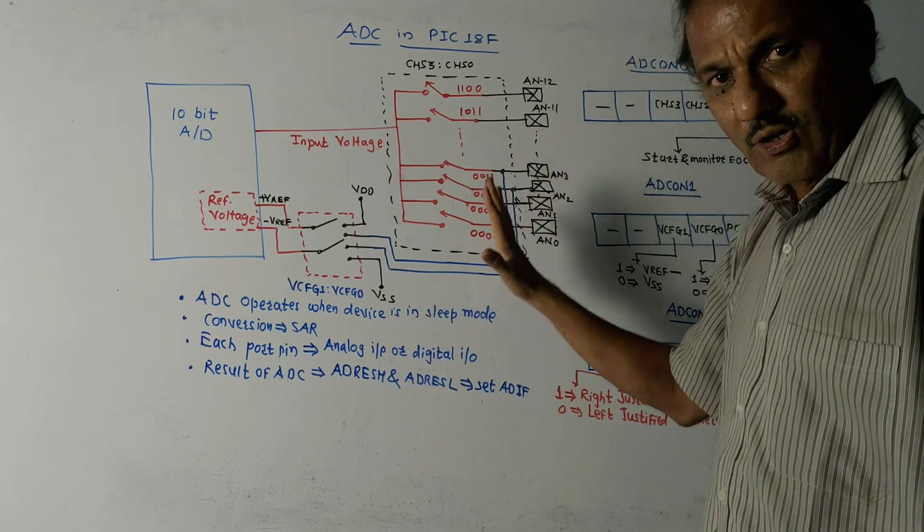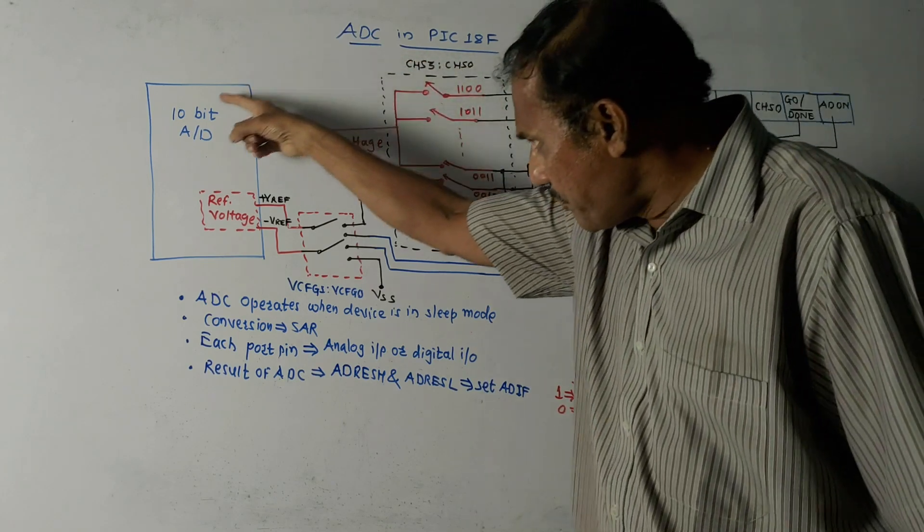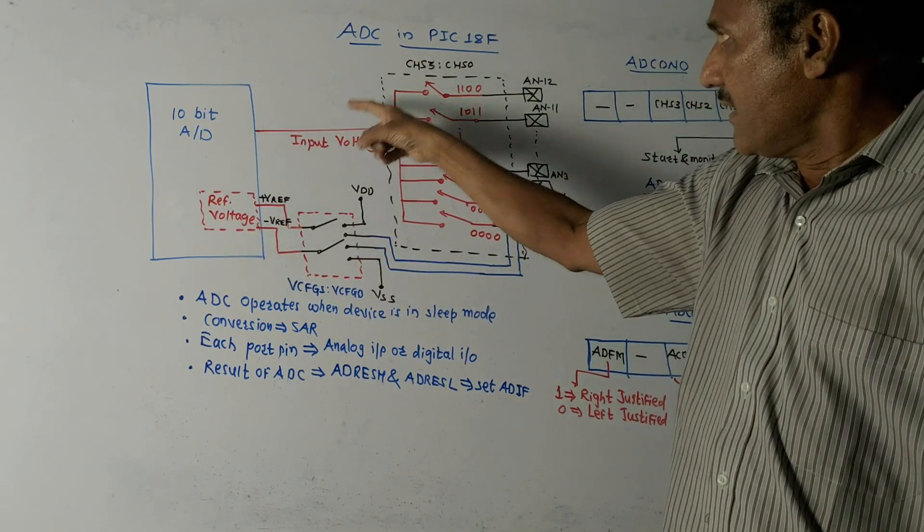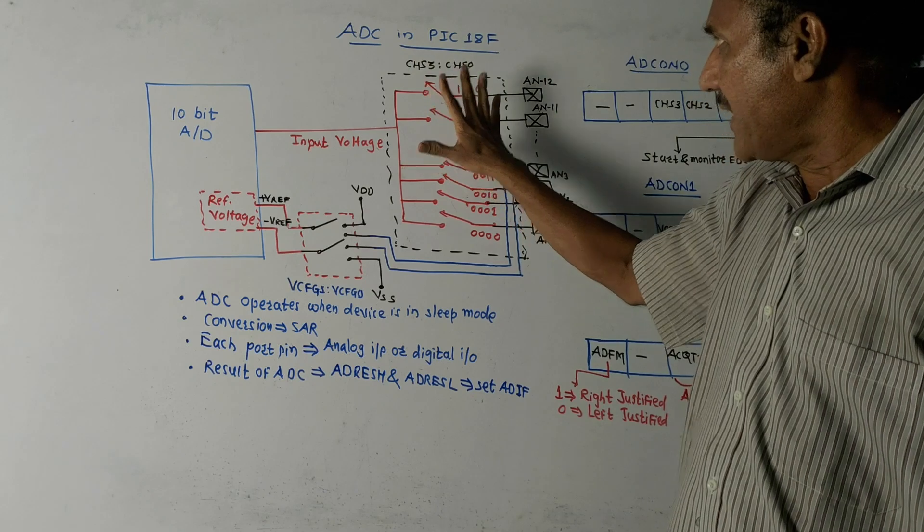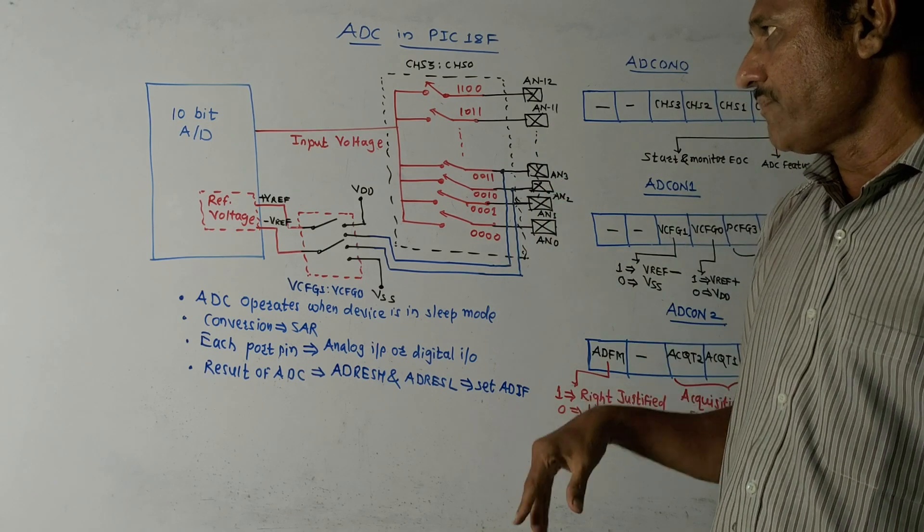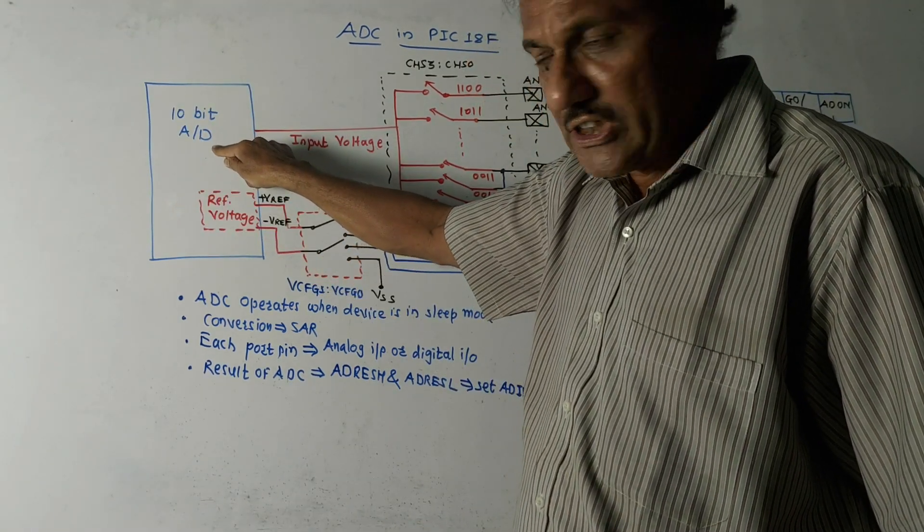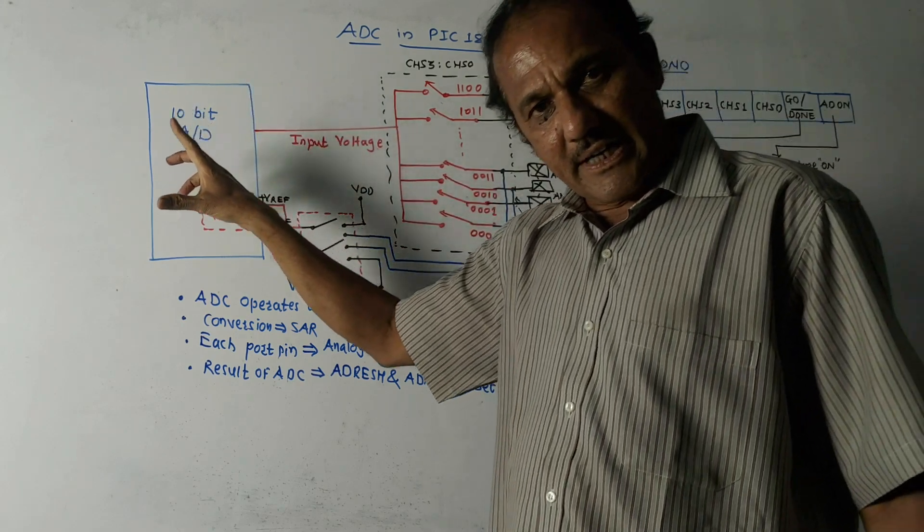So this block indicates the functional diagram of ADC in PIC 18F microcontroller. The first block is 10-bit analog to digital converter. As the name indicates, it converts 10 bits in digital form. Here I have shown reference voltage.